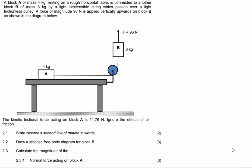Especially since they said it's a rough surface, it means that there is going to be friction. It is connected to another block B which has a mass of eight kilograms by a light inextensible string. That simply means that the string has no effect on this setup.